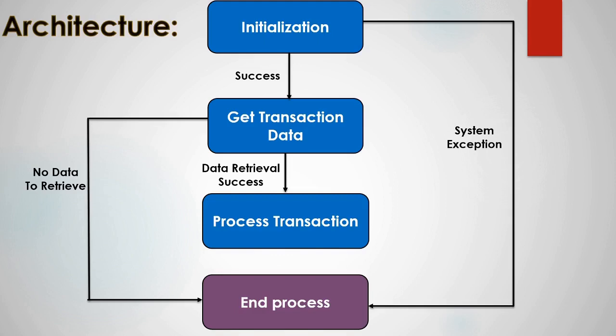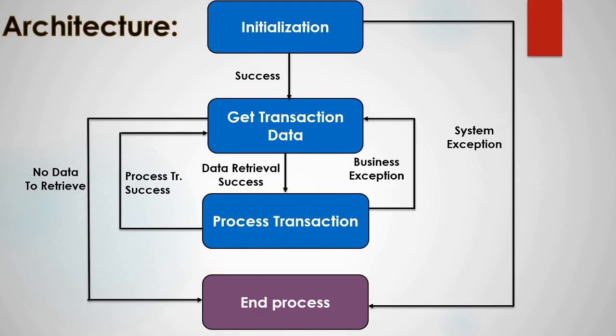The Process Transaction state is where the transaction data is processed to perform the required task on the application. If the process transaction is successful, the flow moves back to Get Transaction Data to retrieve the next transaction. If there is any business exception, the flow also moves back to Get Transaction Data. But if there is a system exception, the flow moves to the Initialization block and starts again from there.